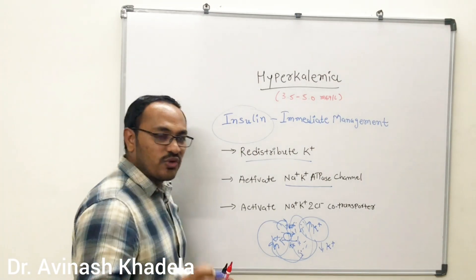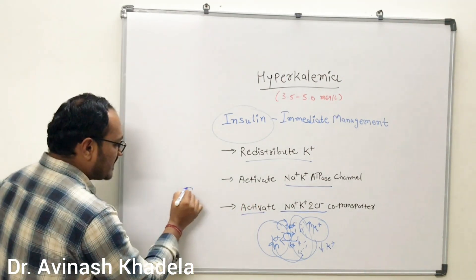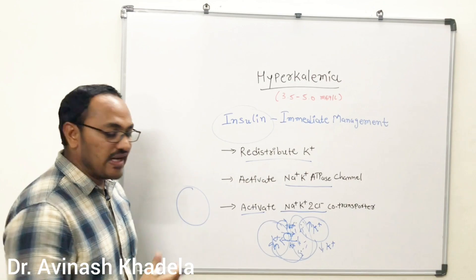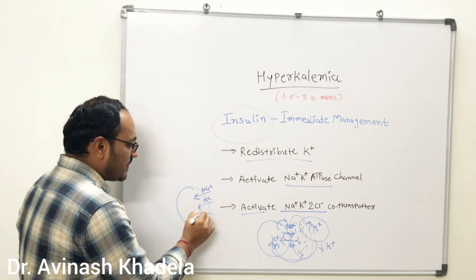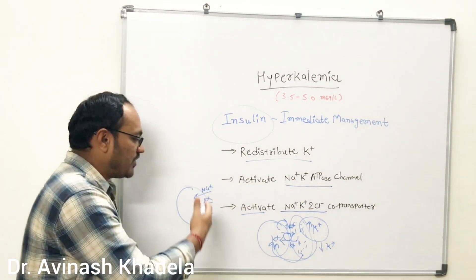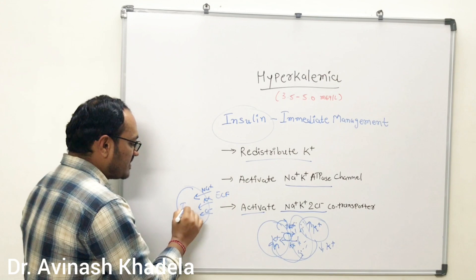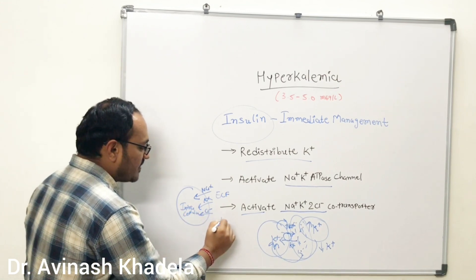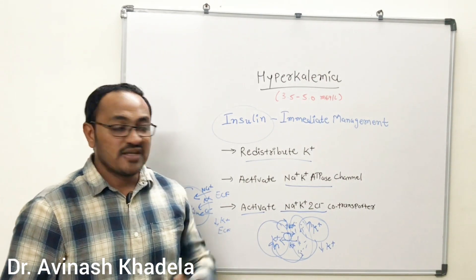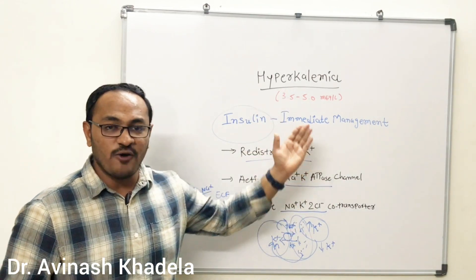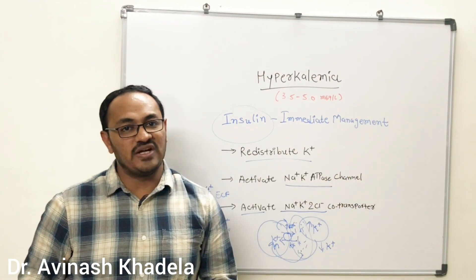The second mechanism is that insulin activates the sodium-potassium-2-chloride co-transporter, which is present in the nephron as well as in the cells. This co-transporter promotes the entry of sodium, potassium, and chloride — all three ions are transferred from the extracellular fluid to the intracellular domain — thus decreasing the potassium level in the extracellular fluid and saving the patient from cardiac arrhythmia or cardiac arrest.